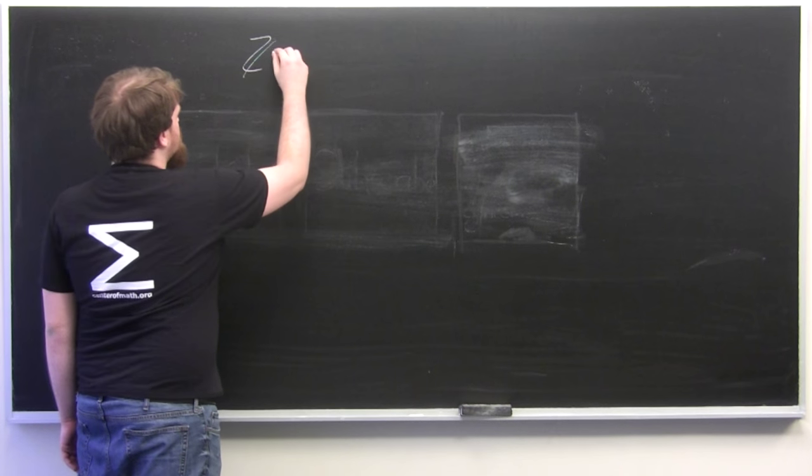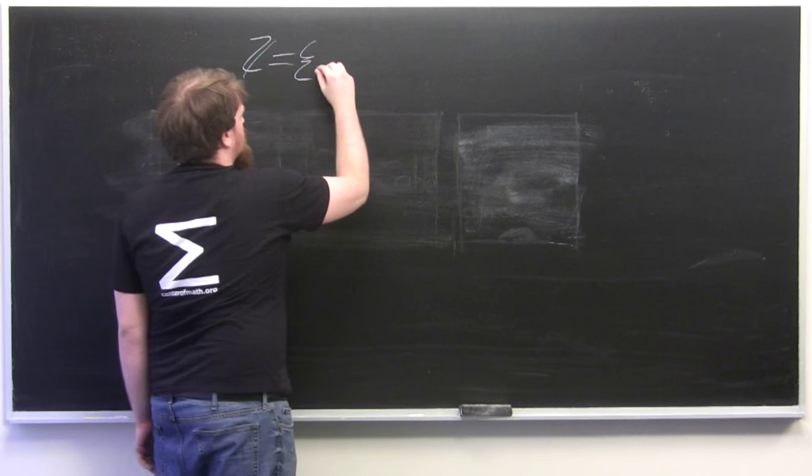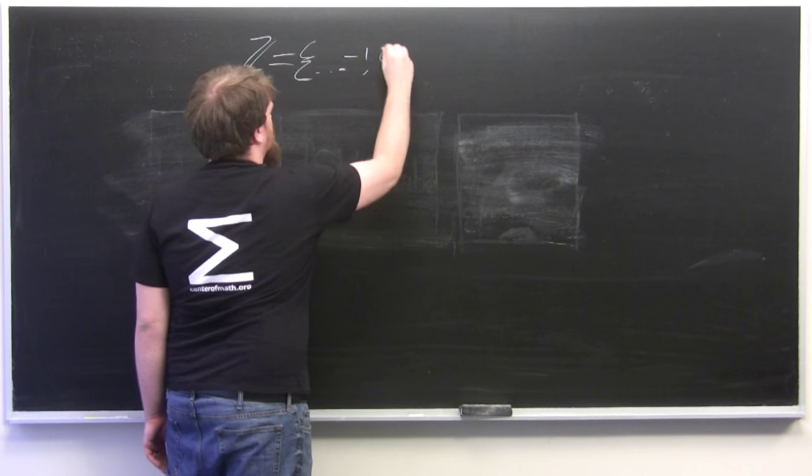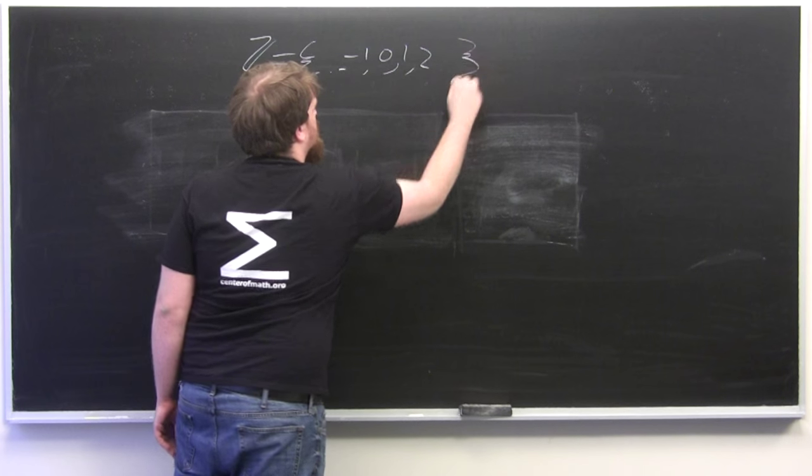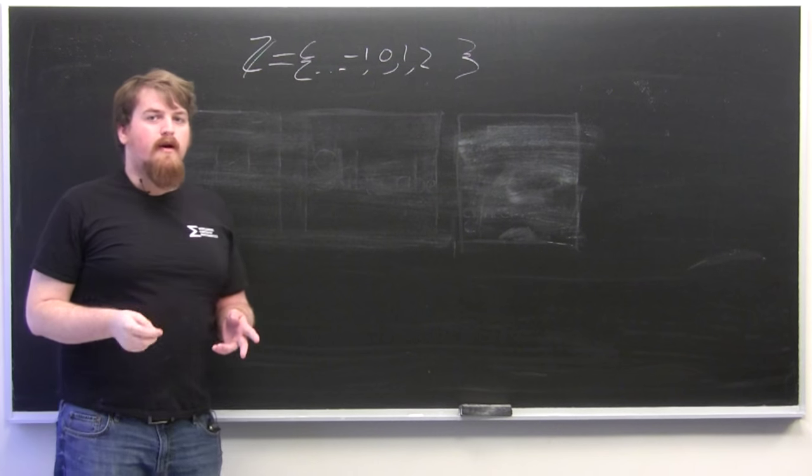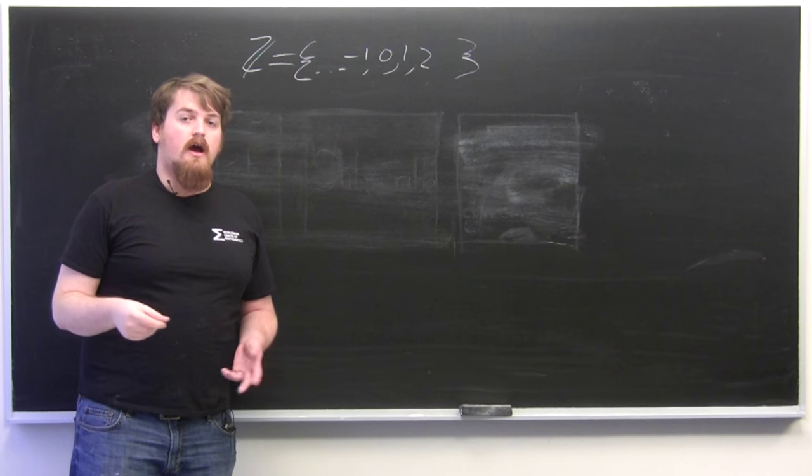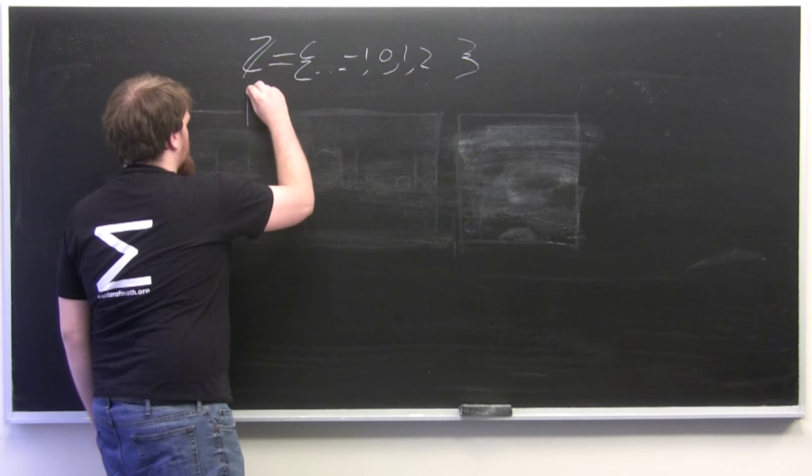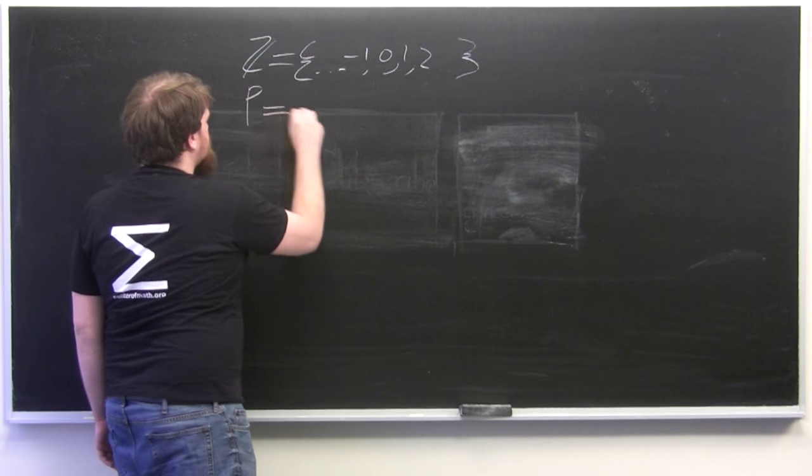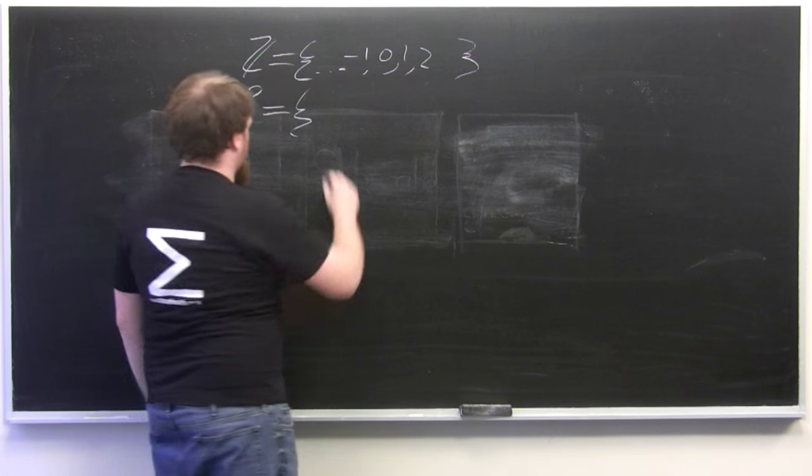Z is the group of the integers and a particular subgroup of the group under multiplication of the rational numbers, which was the powers of 2. We'll call this P for power.